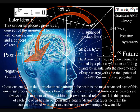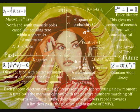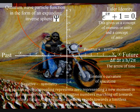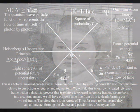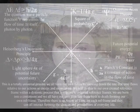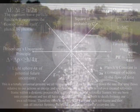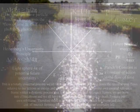The continuous flow of ideas and emotions that form consciousness are always in the moment of now within their own created reference frame. It is this process of each one of us having our own individual reference frame that gives the brain the concept of mind, with each one of us having our own unique view of life. All we need now is an explanation for the uncertainty of life, and for this we have to look at the physics of quantum mechanics.